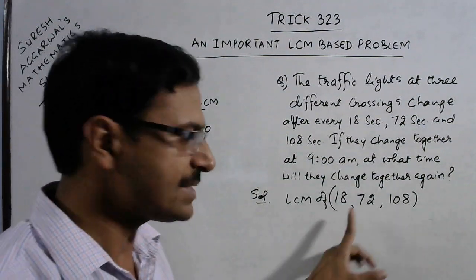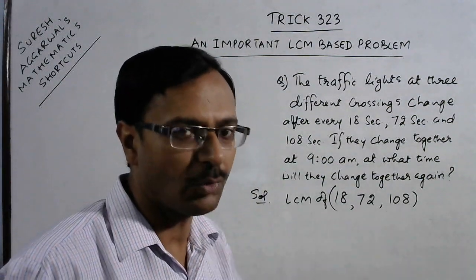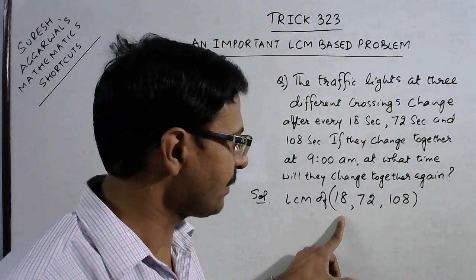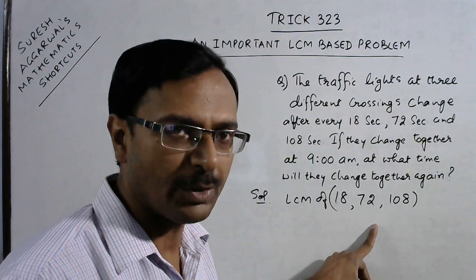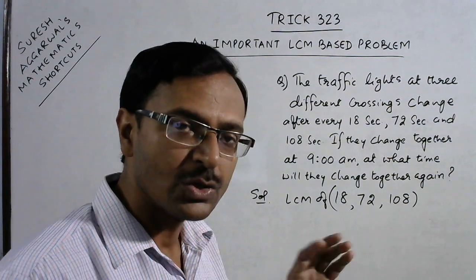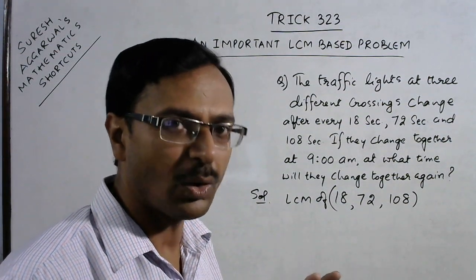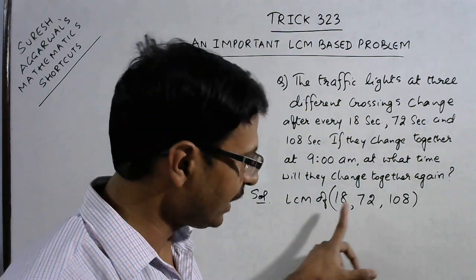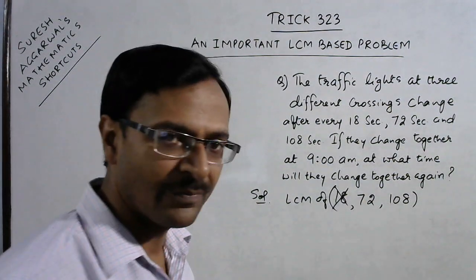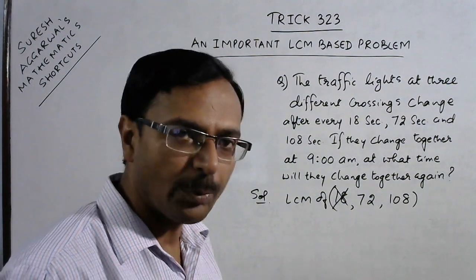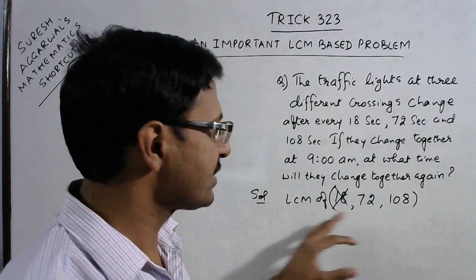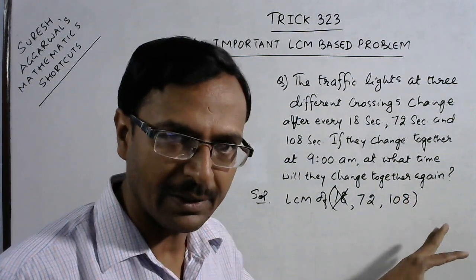I am using Trick number 50 to find the LCM of 18, 72, and 108. Now what do you do in this case? See, 18 is a perfect factor of 72 because 18 times 4 is 72. So 18 is a divisor of 72. Whenever we have a divisor of a given number in the set of numbers, then we don't require to consider the divisor.